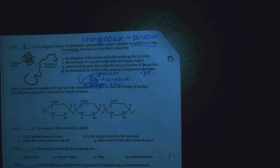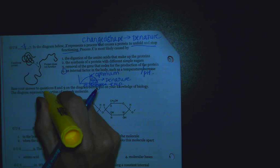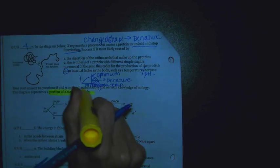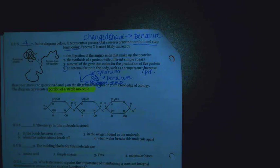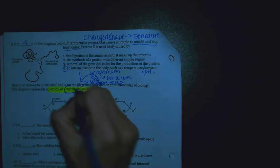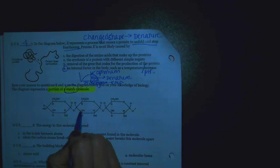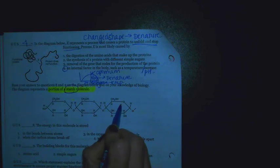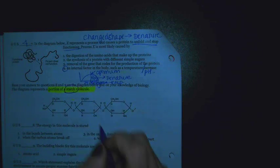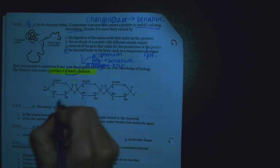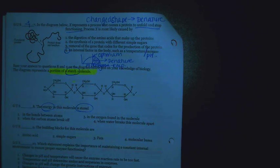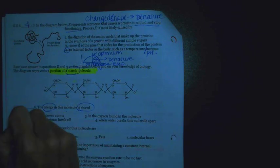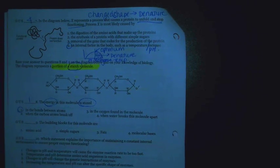Base your answers to questions 8 and 9 on the diagram below and on your knowledge of biology. The diagram represents a portion of a starch molecule. This is one of those times where if you read the top, it'll help you do the rest. So we have starch. Also remember here, we have these rings. All these rings are linked together. Rings indicate a sugar molecule. The energy in this molecule is stored. This should be pretty straightforward. Remember, energy is going to be stored in the bonds in between the atoms.